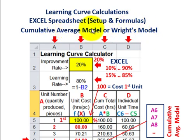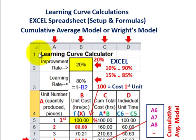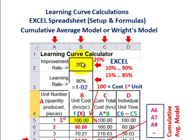Let's start with the cumulative average model. Our learning curve calculator is going to have four columns — A, B, C, and D — with any number of rows. The first thing you're going to have to do is in B2, or column B row two, you're going to put in the improvement rate as a percentage. This is where you'll enter it depending on the different improvement rate you're looking at.